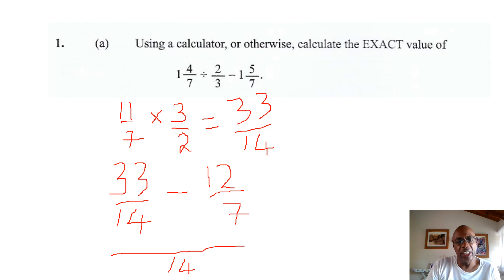The first fraction is 33 over 14. So, we simply put the 33 here. Minus the second fraction. We have to multiply 7 by 2 to get 14. So, we multiply the numerator by 2 as well. So, we are going to get 2 times 12 is 24. Over 14.